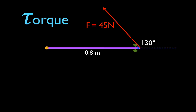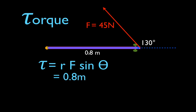Now in order to calculate the torque, we're going to use the torque equation. This is the torque equation. This is the Greek letter tau — the symbol for torque. Torque is simply R times F times the sine of theta. What is R? R is the straight line distance from the axis of rotation to the point of application of the force. That is, in this case, 0.8 meters. We multiply that times the force — the force is 45 newtons — times the sine of theta. By definition, when you calculate torque, theta is the angle between the radial vector, or in this case the extension of the radial vector, and the force vector. And you can see that in this case, that is 130 degrees.